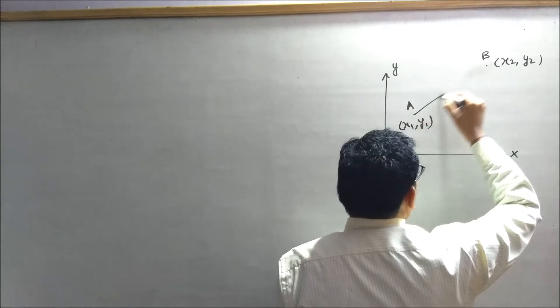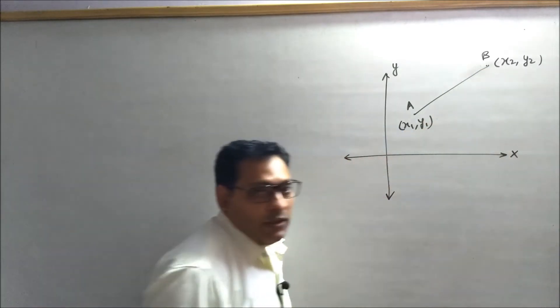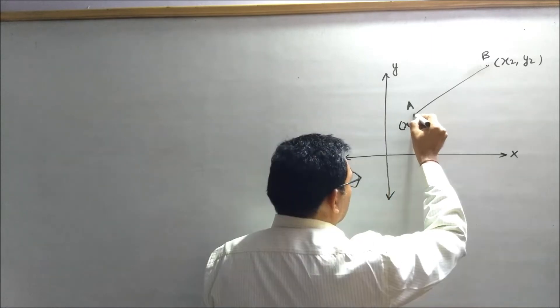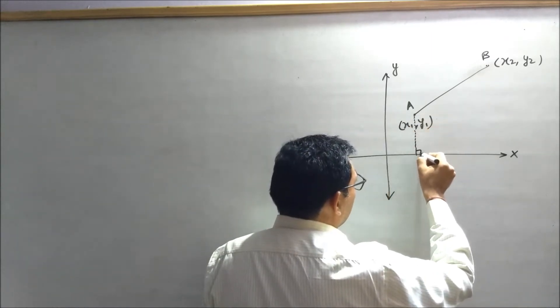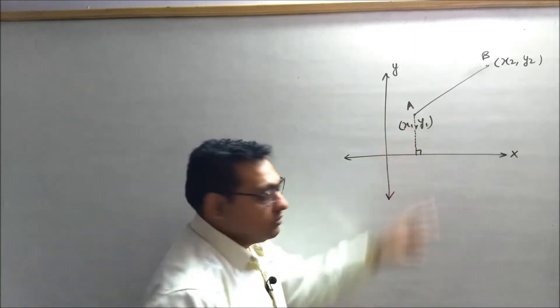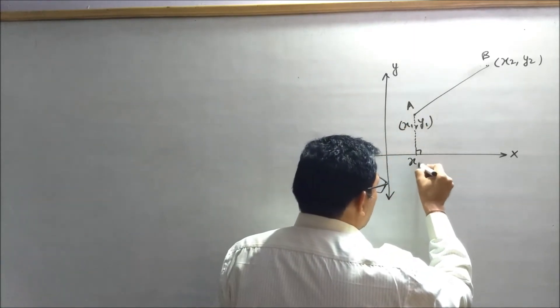Now we have to find out the distance between A and B. First, from point A, let's drop a perpendicular to the x-axis. The x-coordinate of point A is x1, so this is x1, 0.